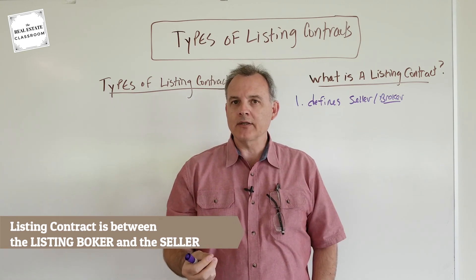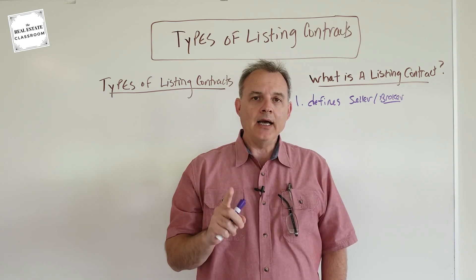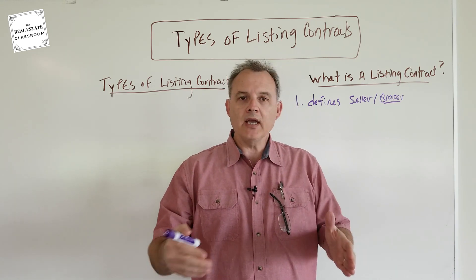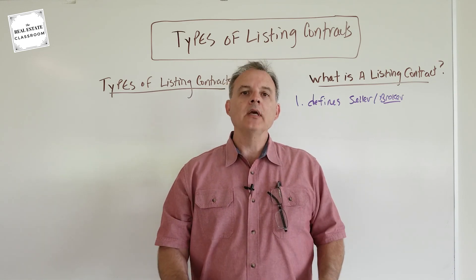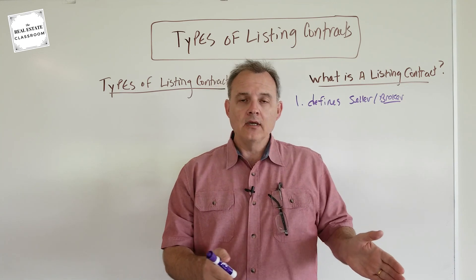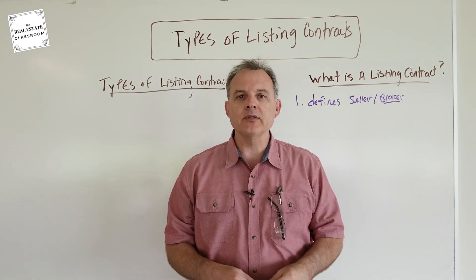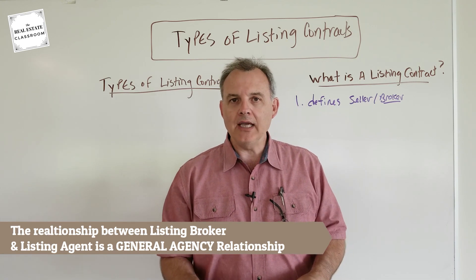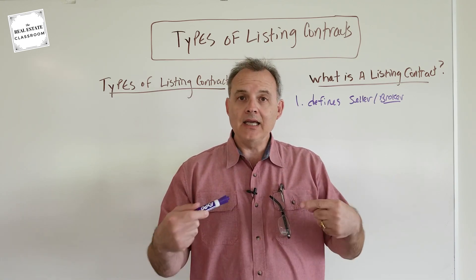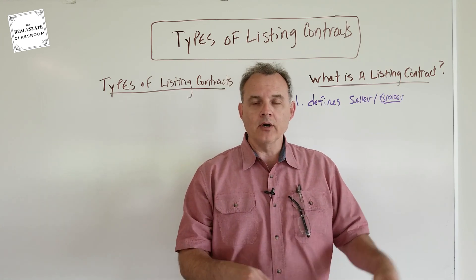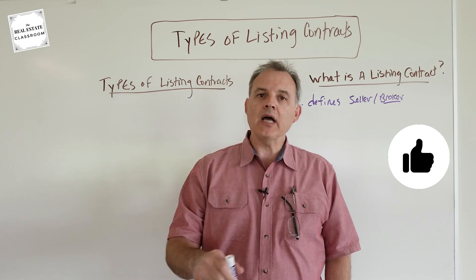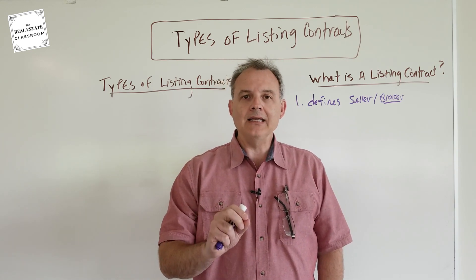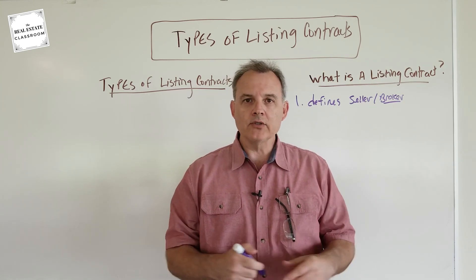Even though it appears that the contract is between the seller and the listing agent, the listing agent is signing on behalf of the listing broker. When a listing agent shows up at a seller's house and sits down at the kitchen table, it's the listing agent that signs the listing contract, not the broker. The relationship between the listing agent and the listing broker is what we call a general agency relationship, which allows the listing agent to speak and sign on behalf of the listing broker.